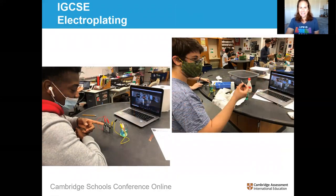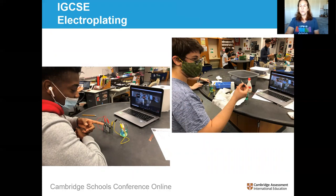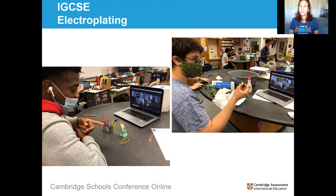Here's an IGCSE electroplating lab. Milton is showing the setup of the alligator clamps. The kids have a copy of the lab on Blackboard and this gives them a chance to ask questions — when you're doing just a virtual lab, there's no way to ask questions, no interaction, and everything works perfectly. Nobody spills anything, nothing gets broken. In a real lab practical, all of these things happen, and kids need to see that it's not the perfect virtual world.